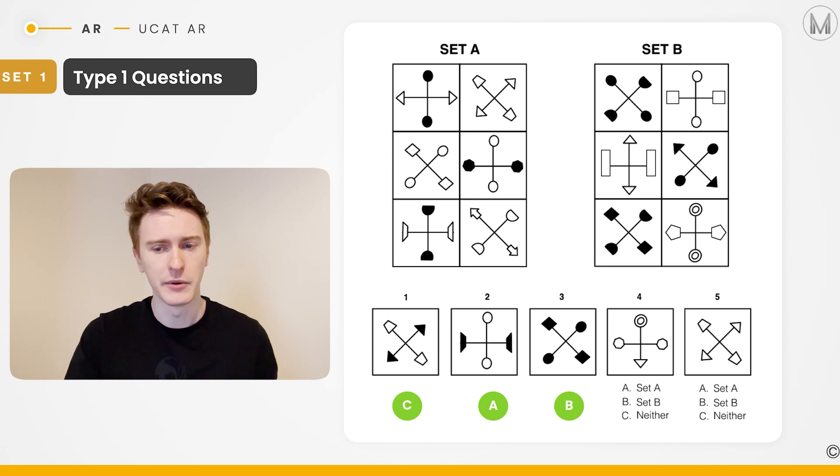Looking at test shape number four, we've got a plus orientation. So we know that if it's mixed, it has to go in set A or if it's all white, it goes into set B. In this case, it's all white. So this belongs to set B. And finally, with test shape number five, we've got that cross orientation. All of the shapes are white. That belongs to set A.